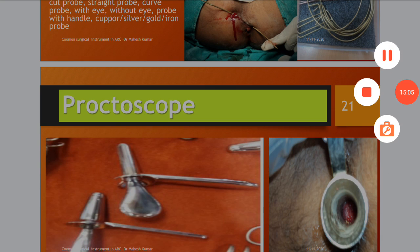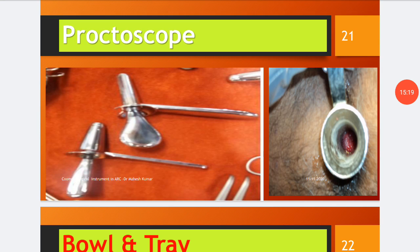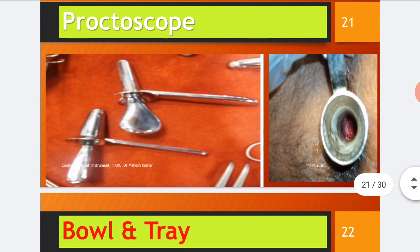The proctoscope is used to visualize the anal canal. It has two parts: obturator and handle, and is used in visualization of the anal canal for piles, ulcerations, and other conditions. It is also used for some therapeutic purposes. Proctoscopy is contraindicated in acute fissures, carcinoma of the anus, or during severe anal stricture.